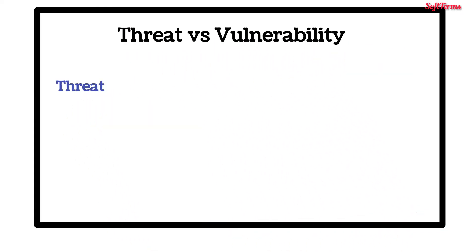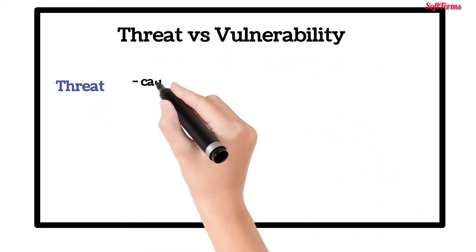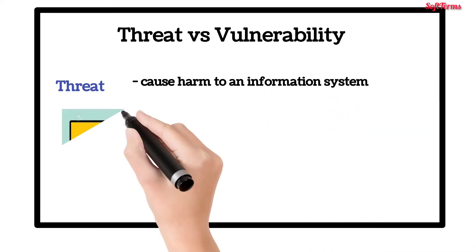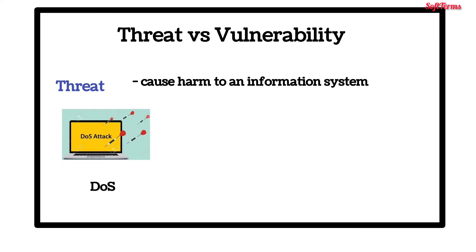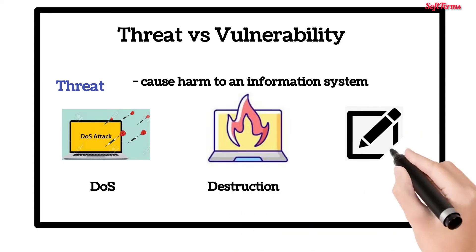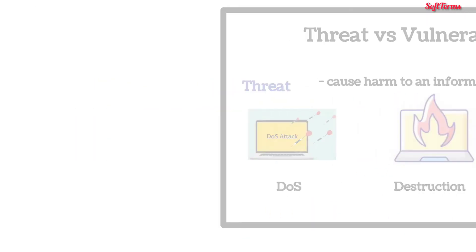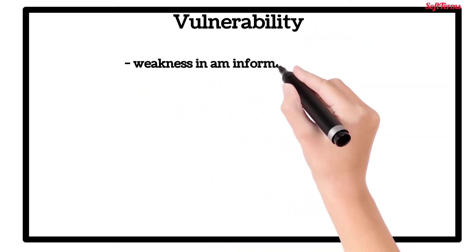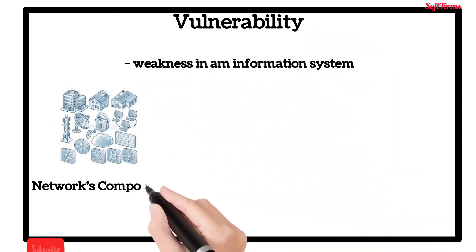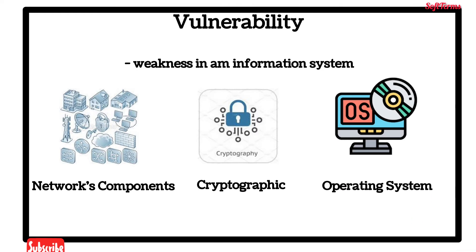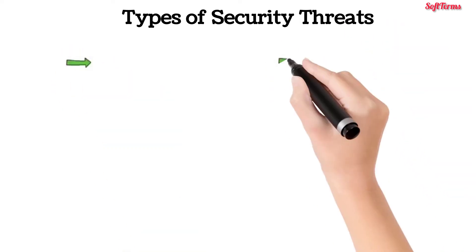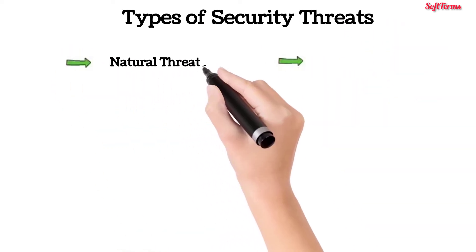Threat versus vulnerability: a threat is the circumstance or event with the potential to cause harm to an information system, in the form of denial of services, destruction, disclosure, or modification of data. A vulnerability is a weakness in an information system, network components, cryptographic, or operating system, which could be exploited.